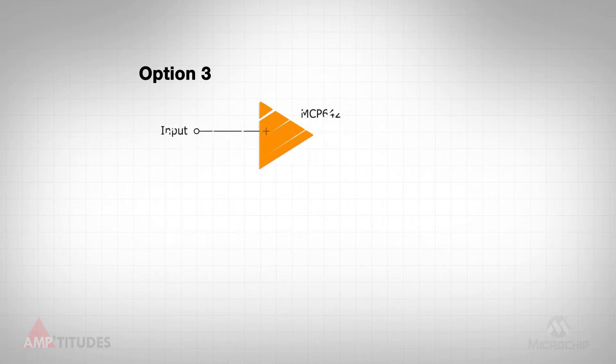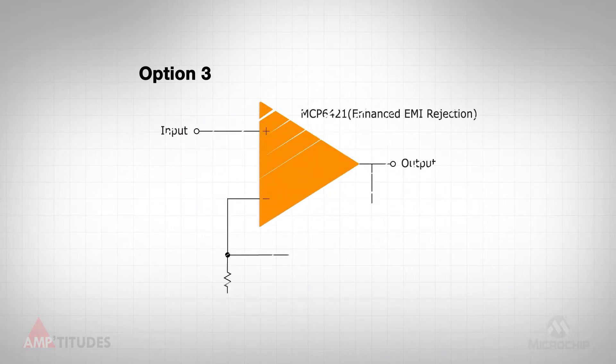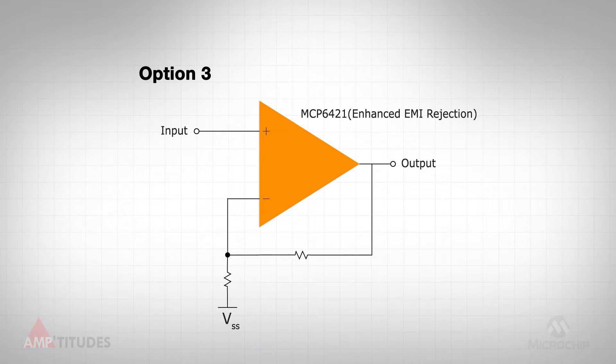The final option is to utilize an amplifier with an on-chip EMI filter. This demonstration uses the MCP6421 operational amplifier, which features an integrated second-order filter on the input pins to enhance EMI rejection.